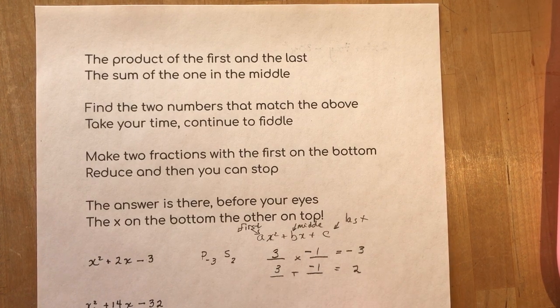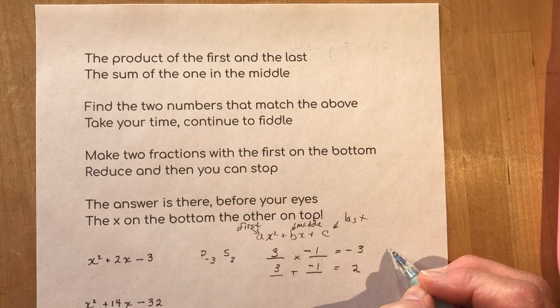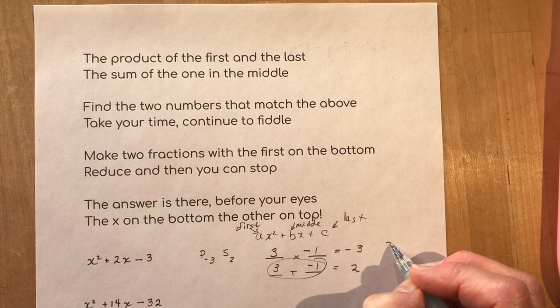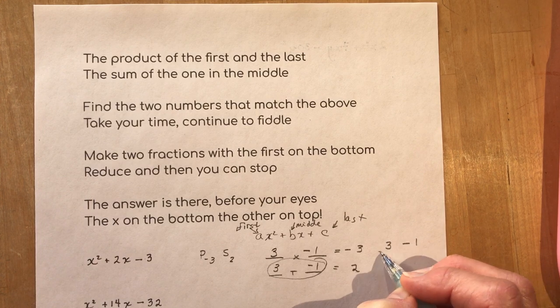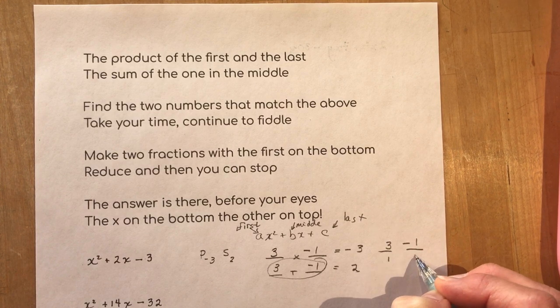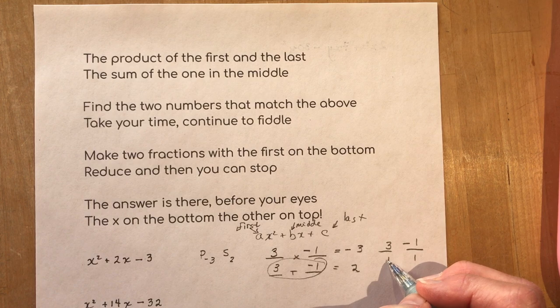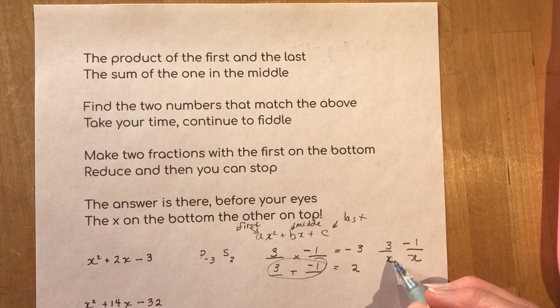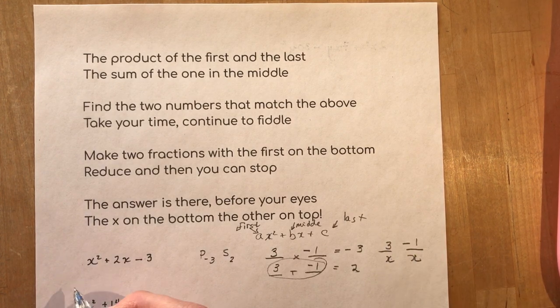Make two fractions with the first on the bottom. Okay we're using these two numbers now. So I have three and minus one. The first is a one. You can't reduce these. They're done. The x on the bottom. The other on top. x plus three times x minus one.